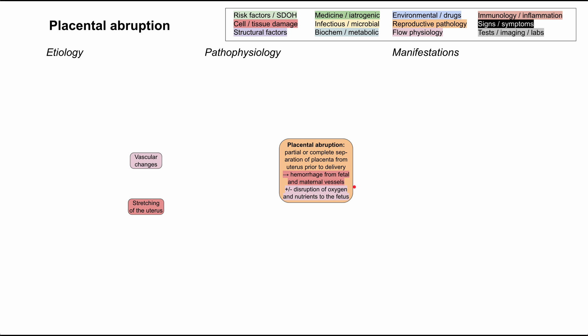It all comes back to two concepts early in the pathophysiology. There are vascular changes in the placenta formation, and/or there has been some severe, abrupt, quick stretching of the uterus. One or both of these factors come together and the vascular networks that connect to the uterine lining and the maternal side of the placenta are torn, and that's what causes the placental abruption.